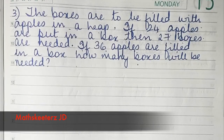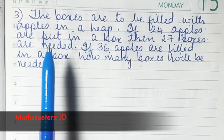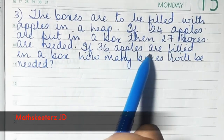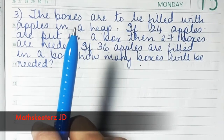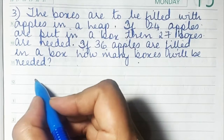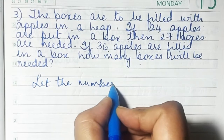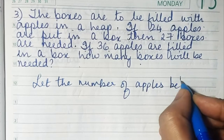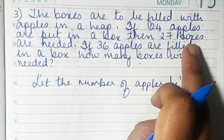Now let's do sum number three. The boxes are to be filled with apples in a heap. If 24 apples are put in a box then 27 boxes are needed. If 36 apples are filled in a box, how many boxes will be needed? First of all, we have apples and boxes. Let the number of apples be x.